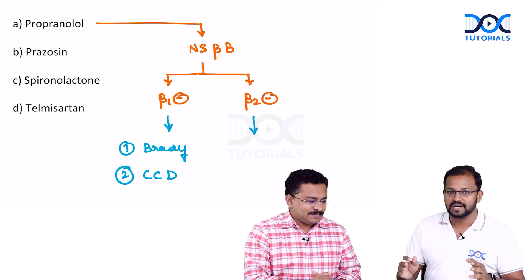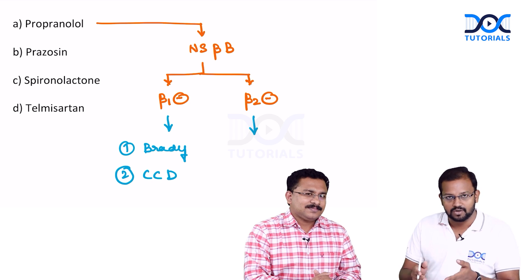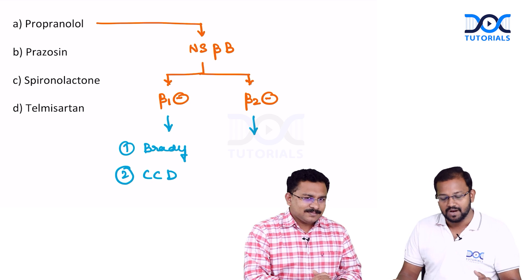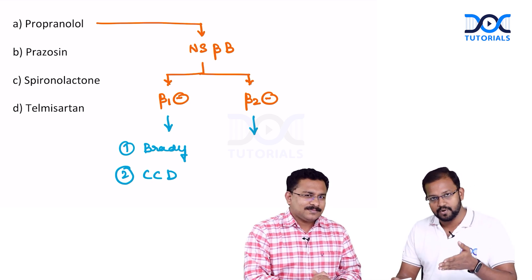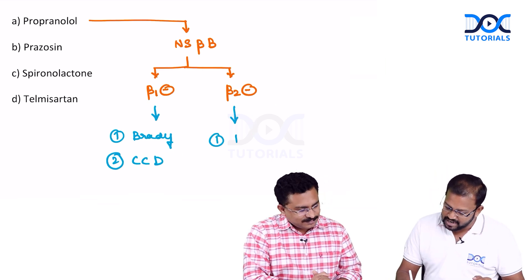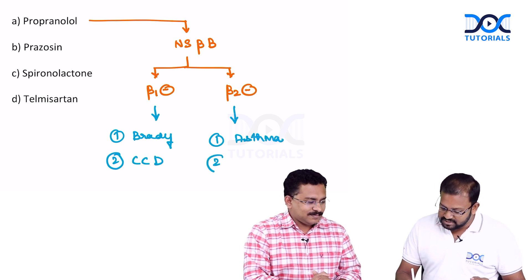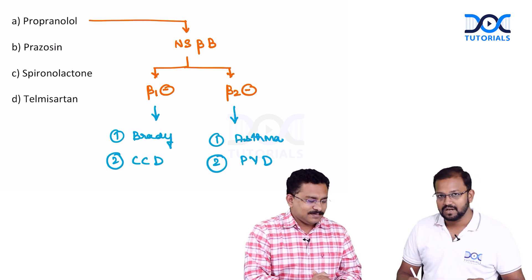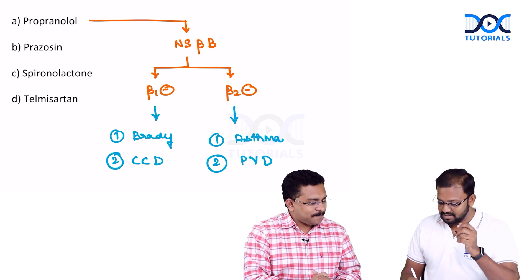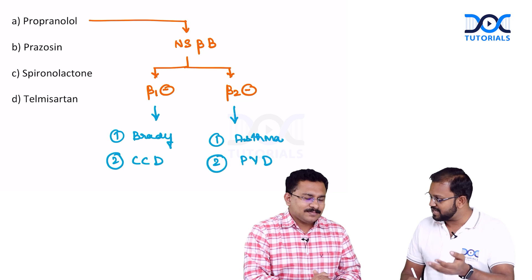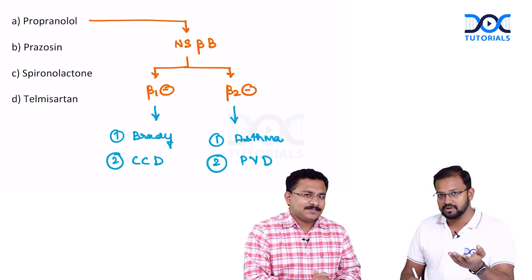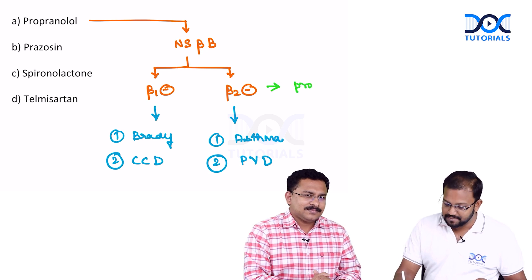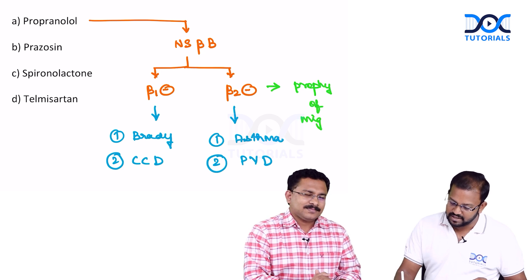Regarding beta-2 blockade: beta-2 receptors are Gs receptors producing smooth muscle relaxation. Propranolol blocks them, producing smooth muscle contraction — that is why it is contraindicated in bronchial asthma. It is also contraindicated in peripheral vascular diseases due to this vasoconstrictive property. However, this same vasoconstriction is why propranolol is the first drug of choice for prophylaxis of migraine. Treatment of migraine is always triptans, but for prophylaxis, propranolol is used.